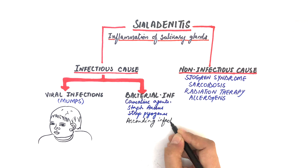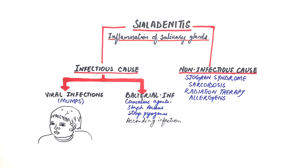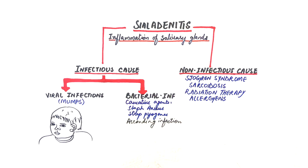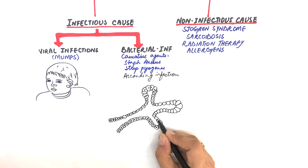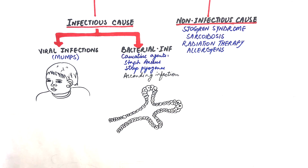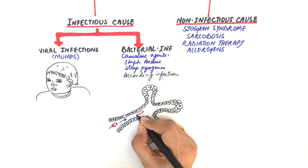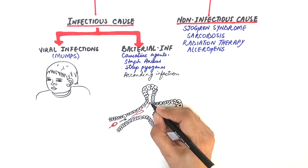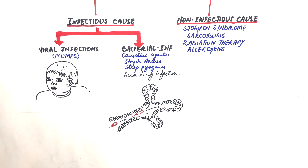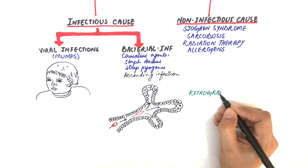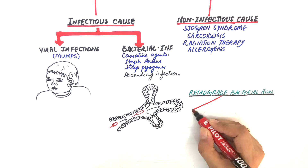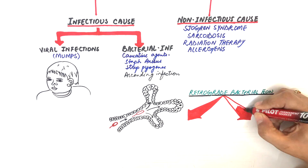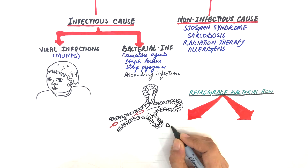Bacterial sialadenitis is always an ascending infection. By ascending infection, it means that the bacteria from the oral cavity moves from the ductal orifice towards the ducts and salivary parenchyma. This retrograde bacterial flow may result from ductal obstruction or decreased salivary flow.